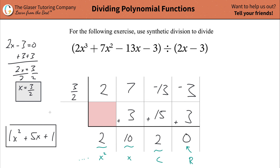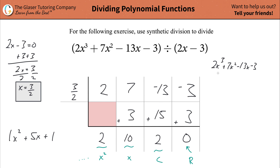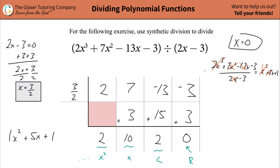So this is the quotient: when you take 2x cubed plus 7x squared minus 13x minus 3 and divide it by 2x minus 3, what you get is x squared plus 5x plus 1. You can check yourself by plugging in any value for x. I'll use 0 because it makes things easy: all the x terms cancel, and you're left with negative 3 over negative 3, which equals 1. And indeed that is 1, so we know we're right.